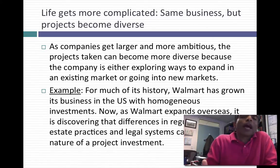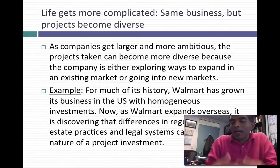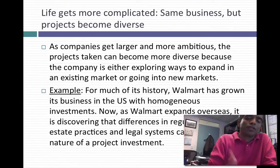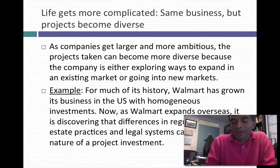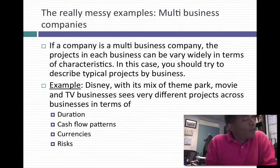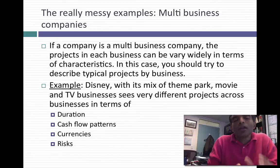About 20 years ago, the Gap went through something similar. Until the early 90s, a typical Gap store looked just like the previous one — another mall store with a 12-year lease. But then the Gap started opening Banana Republic and Gap Kids, and street stores versus mall stores. Things get a little messier, and I would draw typical projects by group when investments are getting more diverse. Further up the difficulty ladder, you have multi-business companies where each business is so different that you can't come up with a single typical project, but you can come up with one for each business.